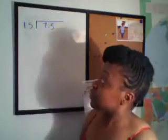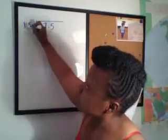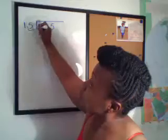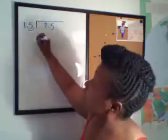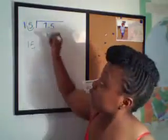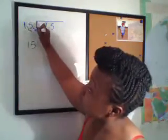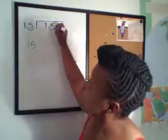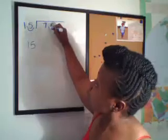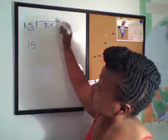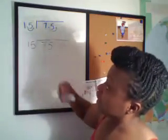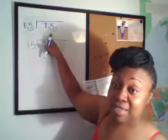So the first thing we need to do is move the decimal in 1.5 over to the right, and we will change the 1.5 into 15. Because we only moved one space over to the right in the divisor, we have to move one space over to the right in the dividend as well. So we're going to move over one space. Now our dividend is 75.